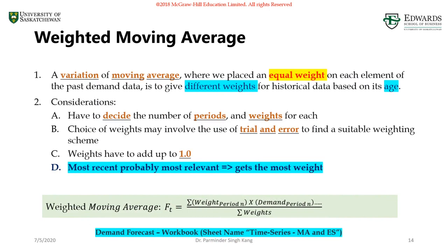Both methods are simple. Weighted moving average provides the advantage of assigning higher weights to the most recent actual demand, better representing the time series. It's slightly more complex than simple moving average because you need to decide on the weights, and there's no formula for optimal weights unless you use optimization methods. If you have any questions, reach out or ask during live sessions. In the next video we'll talk about exponential smoothing.